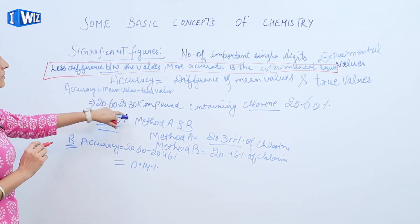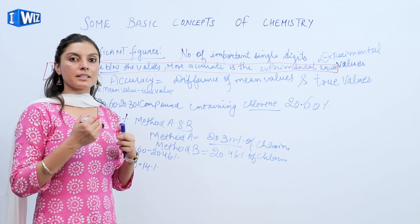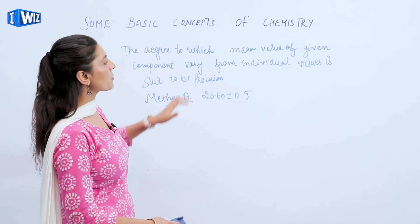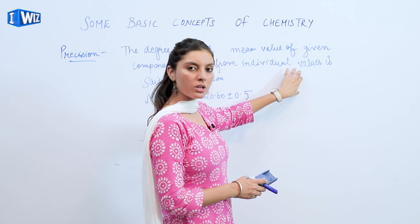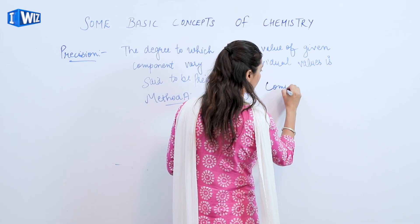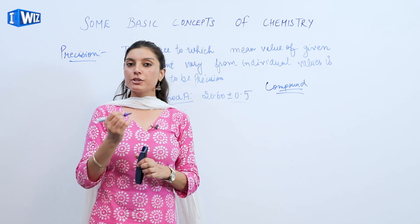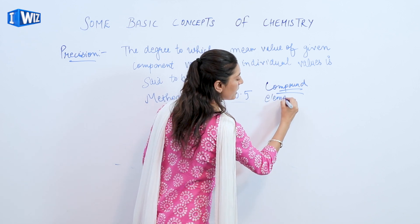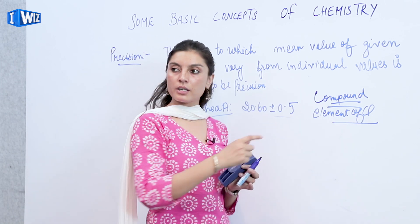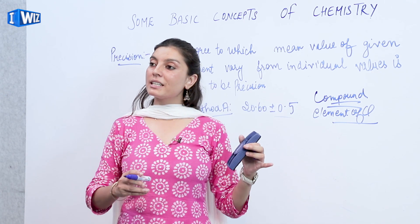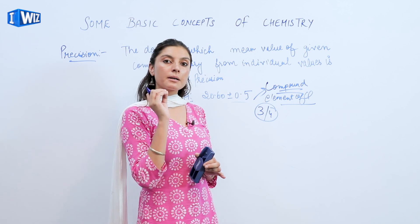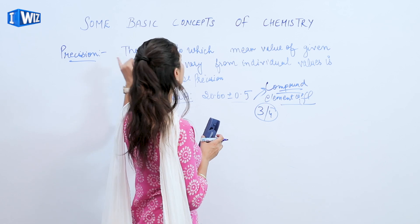When we have a very small difference in these values, accuracy increases on its own. Another important concept for significant figures is precision. It says that the degree to which the mean value of a given component varies from the individual values is called precision. Let's say I have performed an experiment to find the percentage of chlorine in a compound three to four times using the same method. The degree to which the percentage of chlorine varies across those trials gives the precision value.